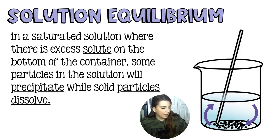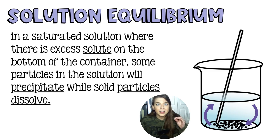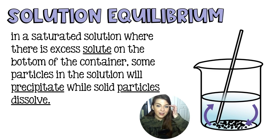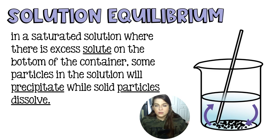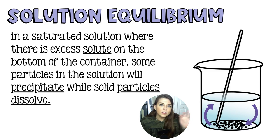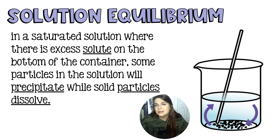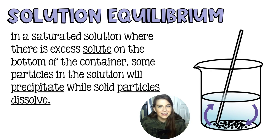To your naked eye, you would not be able to tell that different particles are swapping places because it's the same particles. Let's say it's sodium chloride — the same amount of sodium chloride is going to sit on the bottom of the container. If your solution is oversaturated to the point that you have five grams of stuff sitting on the bottom, so long as the temperature doesn't change, you'll always have five grams sitting on the bottom. It's just the individual particles that are going to exchange places. Because we can't see it, we need tracers to confirm that it's actually happening.